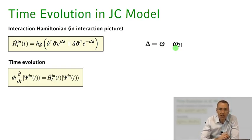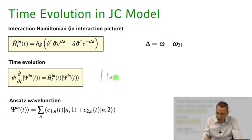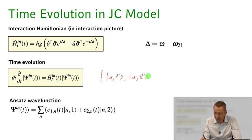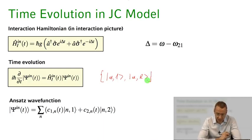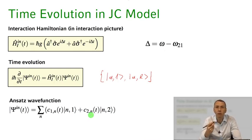To calculate the time evolution, we write down a general ansatz wave function. A complete basis for this system is formed by all basis states with n photons and the atom in the ground state, and n photons with the atom in the excited state, summed over all photon numbers. I can expand any wave function in this basis with complex expansion coefficients c₁ₙ(t) and c₂ₙ(t) that we need to solve for, given initial conditions of our light-atom system.